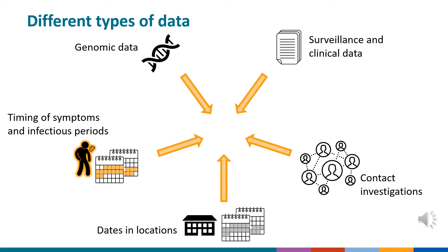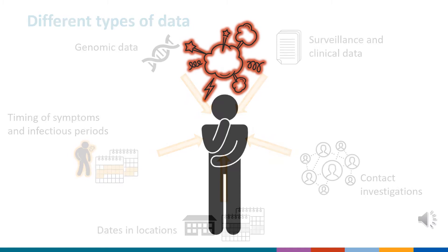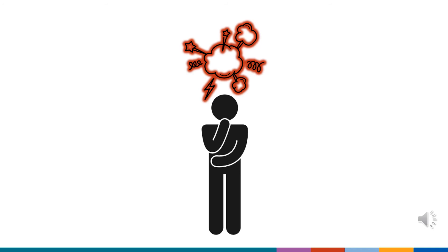And genomic sequencing data used to estimate the genetic relatedness of TB isolates collected from patients. Integrating and analyzing these diverse data systematically and accurately to inform public health action can be time-consuming and computationally difficult. These data-related challenges can create delays, errors, and serious headaches for public health officials undertaking TB control activities.